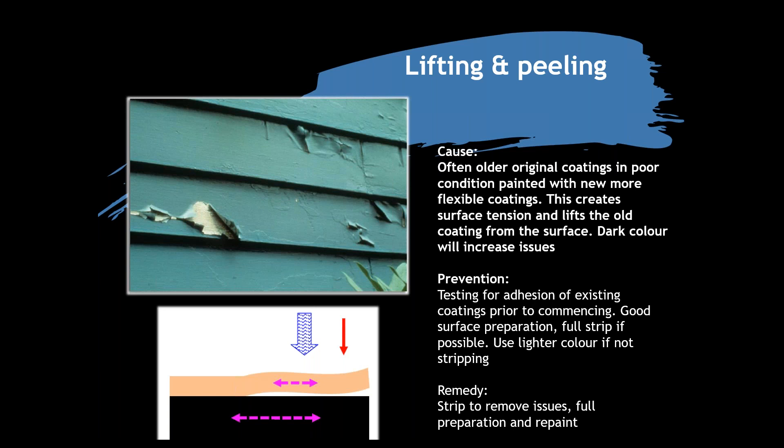Darker colours pump more heat into the substrate and can aggravate this issue. When out speccing things, we test for adhesion using cross-hatch tests, and good surface preparation is required. If you saw this all over a house, it needs to be stripped and started again. With an old bungalow or a property with 10-plus layers of paint, strip back to bare and start again. Be aware of the possibility of lead in older paint systems and take that into account.